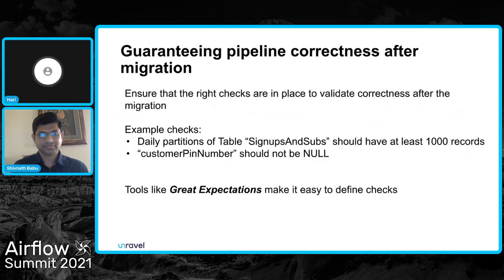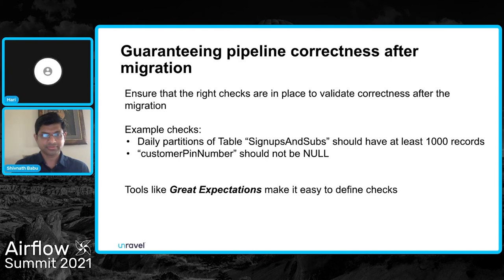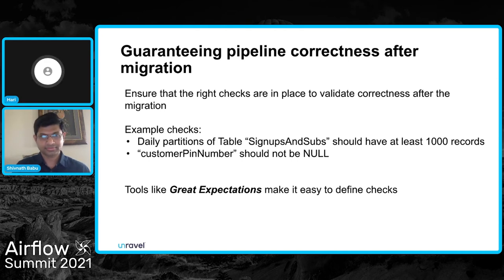When we talk about correctness, we are talking about data quality. Artifacts such as tables, views, or CSV files are generated at almost every stage of the pipeline, and we need to lay down certain data checks at these stages to make sure things are consistent across both environments. For example, a check could be that partitions of a table should have at least N number of records, or that a column should never have null values. There are tools like Great Expectations which make it very easy to define and maintain such validation checks and integrate them into the pipeline itself.